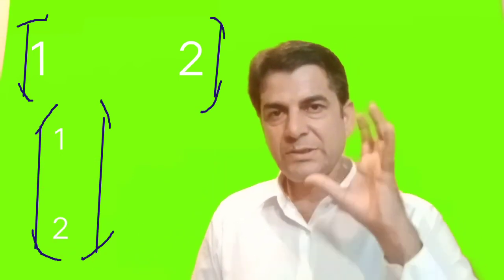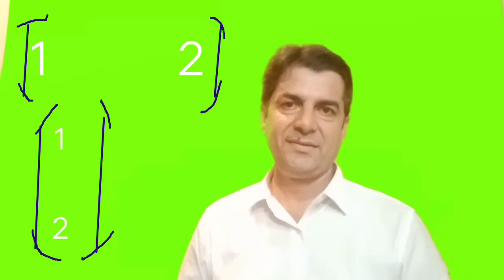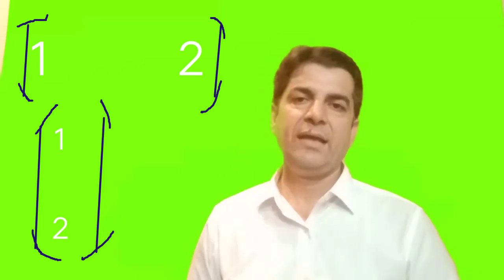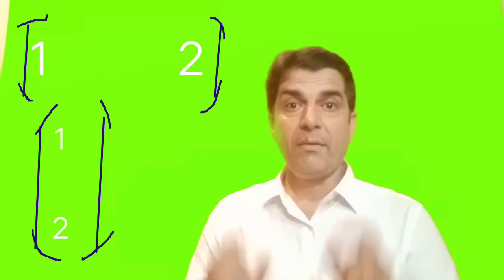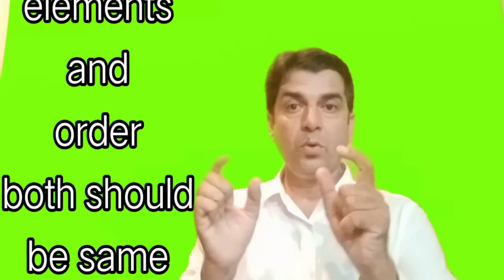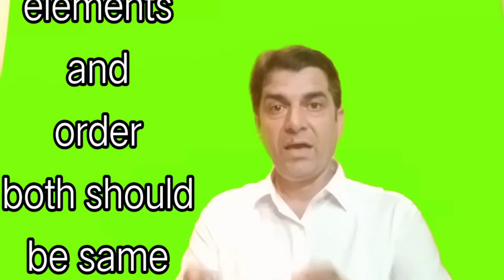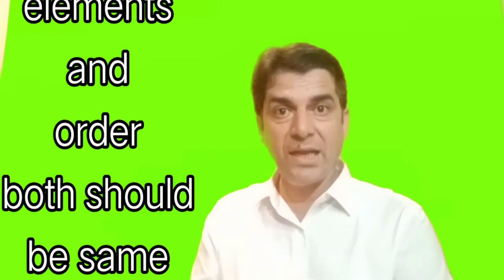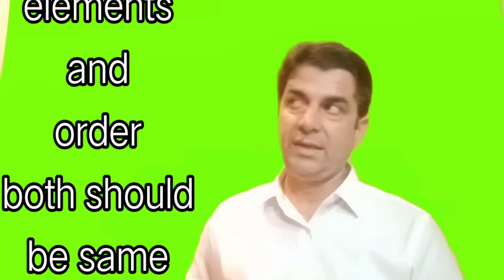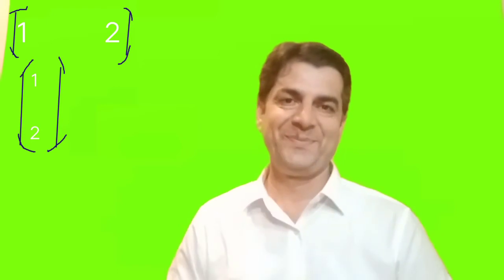People, students always say yes. So I then explain that equal matrices are those matrices having same elements and also the same order. In this example, 1, 2, 1, 2, the elements are same, but the order is not same. So order should be same. Then the matrices are called equal matrices.